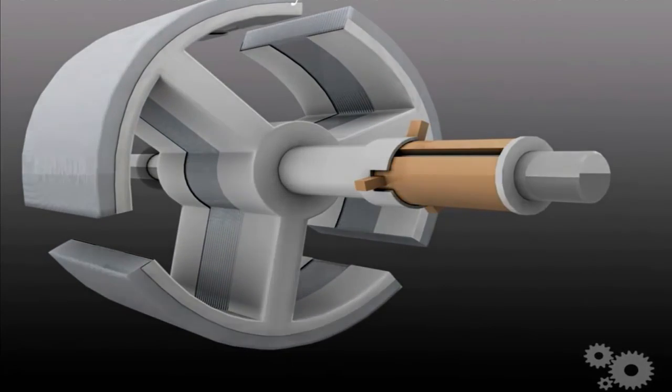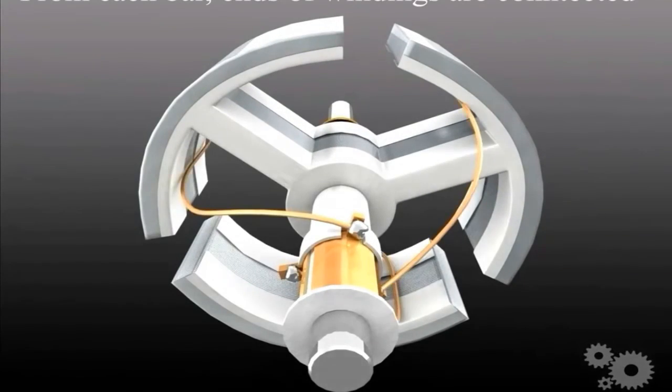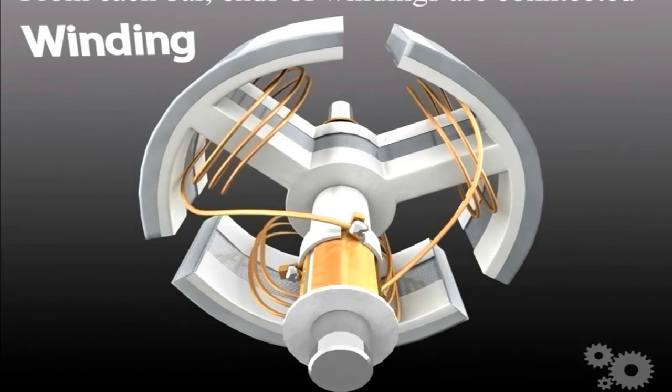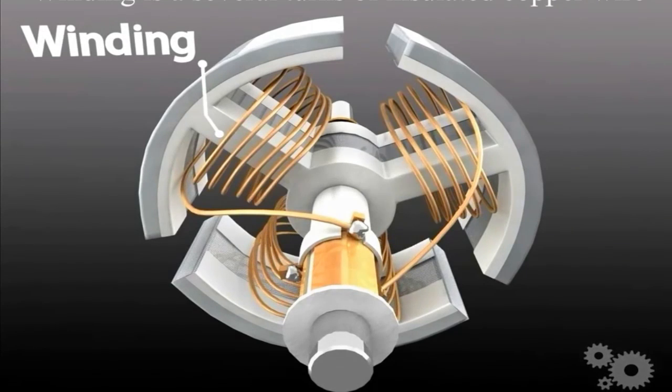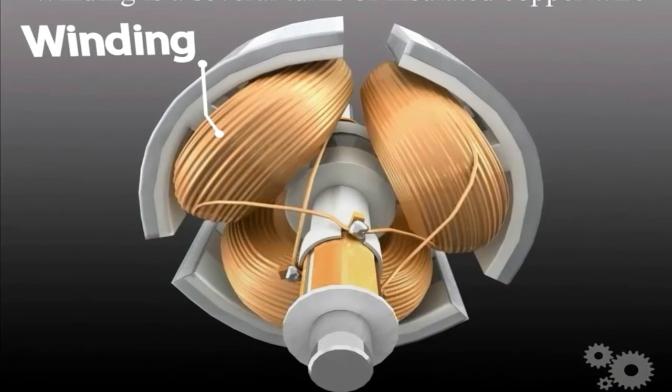From each bar, ends of windings are connected. Winding is several turns of insulated copper wire. Winding is placed in slots of core to carry current in magnetic field to develop electromagnetic torque.